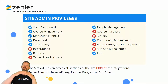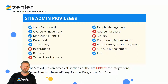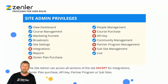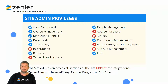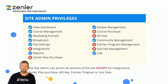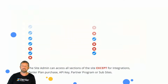Moving on to site admin, which is next in order of privileges. Site admin has basically everything the owner has, but they cannot touch integrations, cannot access the Zendler plan to purchase or upgrade your site, cannot do course purchases, cannot access API keys, and cannot access partner program management or sub-site management. The site admin can access all sections of your site except for integrations, Zendler plan purchase, API keys, partner program, and sub-sites.